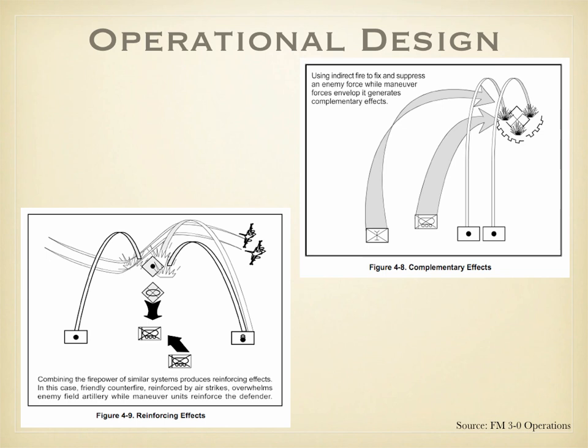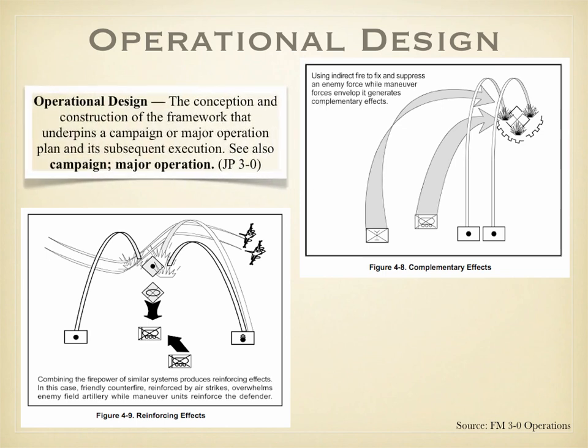Military symbols are also used in operational design. Operational design is defined as the conception and construction of the framework that underpins a campaign or major operation plan and its subsequent execution. Military ontologies help war planners visualize the relations between entities and events in an operation, making them critical tools for the operational design process. Furthermore, military ontologies are prerequisites for innovations such as close air support, combined fires, and joint operations.